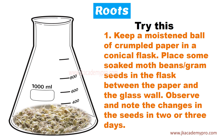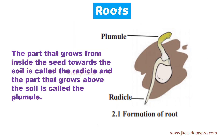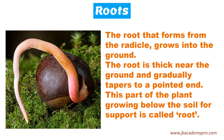If you plant these seeds in soil, you will find that one part grows towards the soil — this part is called the radicle. The other part grows above the ground and is called the plumule. The radicle grows into the ground; it is thick near the surface and gradually tapers to a pointed end, growing deep into the soil. This part growing below the soil supports the plant, which is why it is called the root.